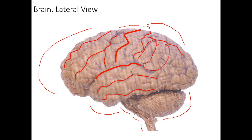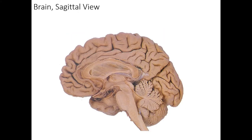As we continue, there are a few extra things to see here. We have the pre-occipital notch, which is a landmark where we can see the separation between the temporal cortex and the occipital cortex. And we can see the parietal-occipital sulcus right here. That is the visible portion of the parietal-occipital sulcus from the lateral view, and those boundaries show us where the occipital cortex is, there in the posterior of the brain.